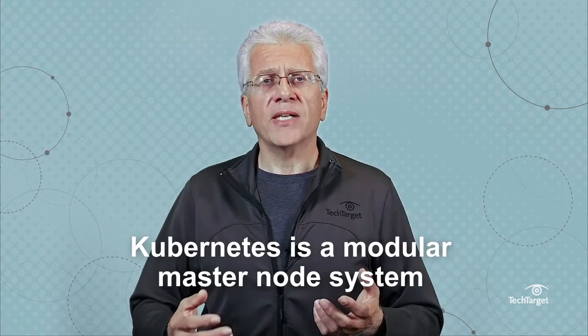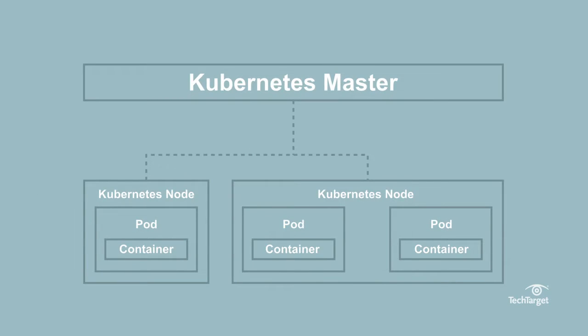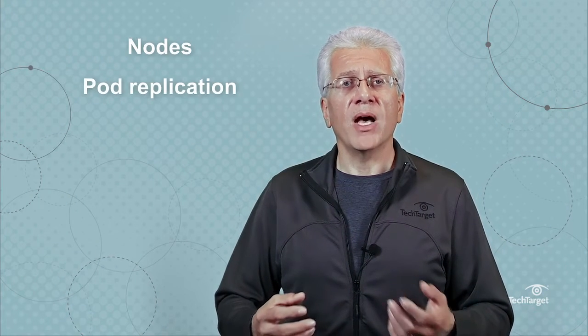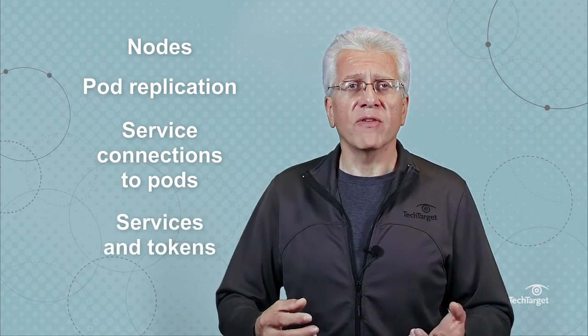Kubernetes is a modular master node system. A node is a set of IT resources, such as physical or virtual machines, on which one or more containers run. A node supports a Kubernetes pod, which is a group of containers and also the smallest unit of deployment in Kubernetes. The master is a machine in the Kubernetes cluster responsible for handling control and cluster events. The heart of the Kubernetes master system is the component called Kube Controller Manager, which runs controllers for nodes, pod replication, service connections to pods, and services and tokens. A scheduler called KubeScheduler decides which pods should run on a given Kubernetes node.